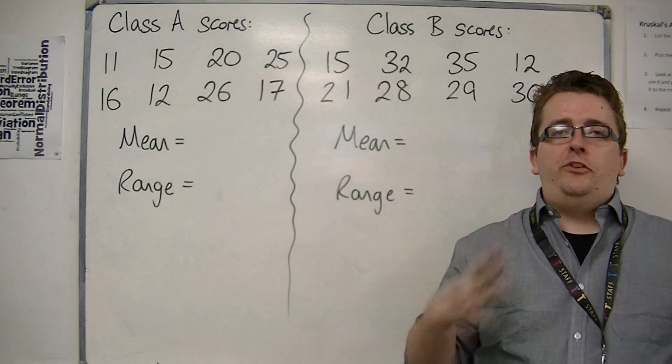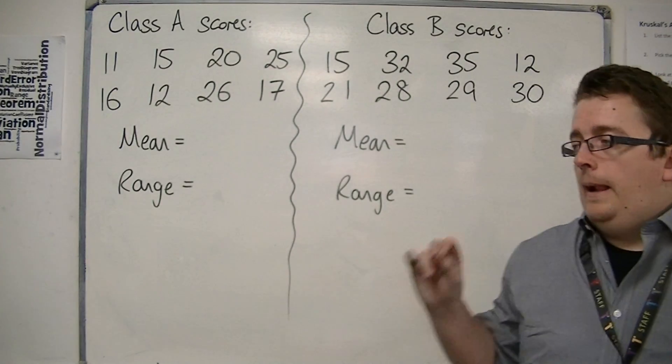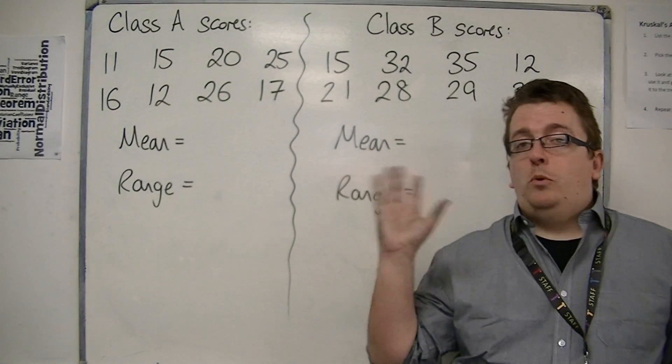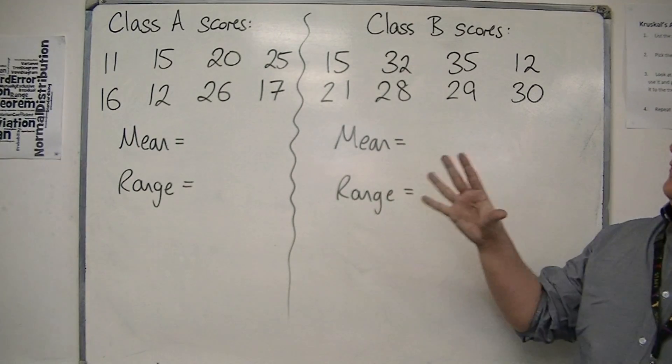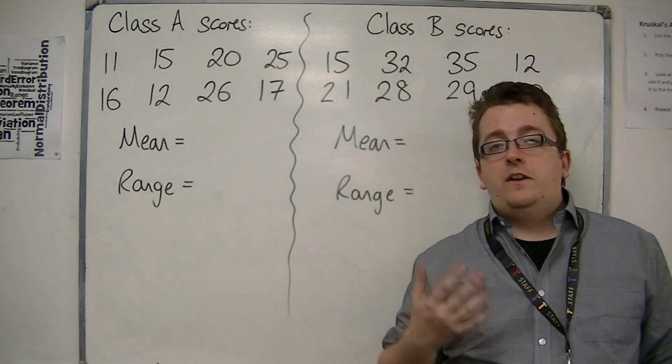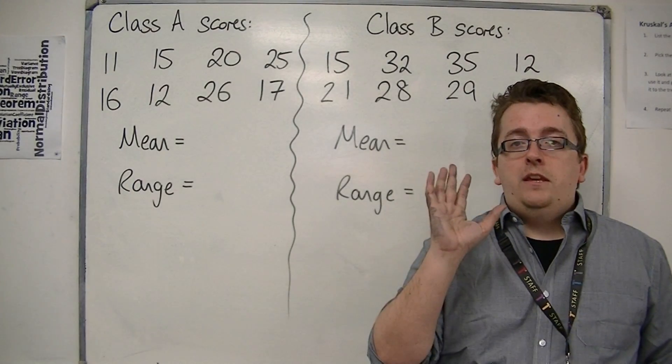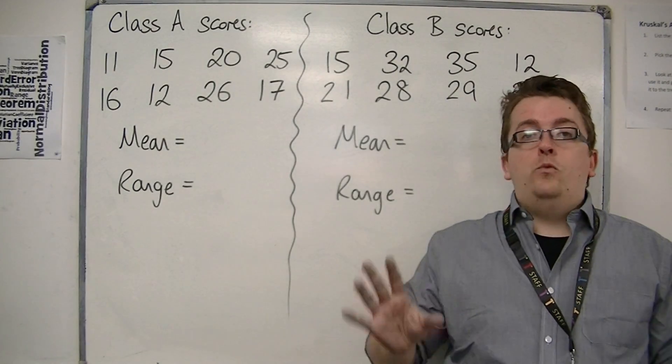So let's say we give two classes, Class A and Class B, the same test, and there are eight people in each class, and these are the scores that they get. We need to work out the mean and the range, and what we want to do is compare the two classes to see how well they've done.